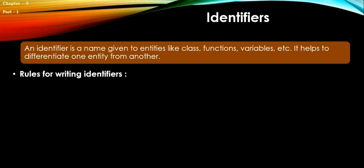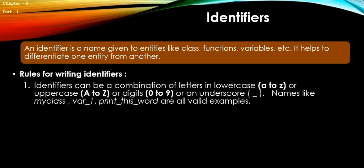Rule number one: Identifiers can be a combination of letters in lowercase (a to z) or uppercase (A to Z), or digits 0 to 9, or an underscore. Remember, except underscore, no other symbols are used. Names like my_class, var_1, print_this_word are all valid examples.